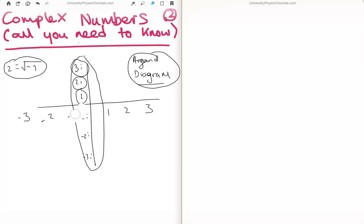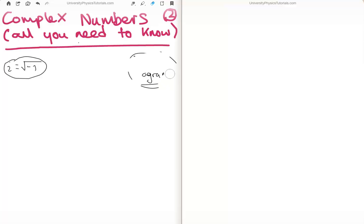And we call such a diagram an argand diagram. So what I'm going to do now is show you why complex numbers are so useful. So just bear with me and I'll just clean up here. Okay, so complex numbers are very important in physics. They make things so much easier.